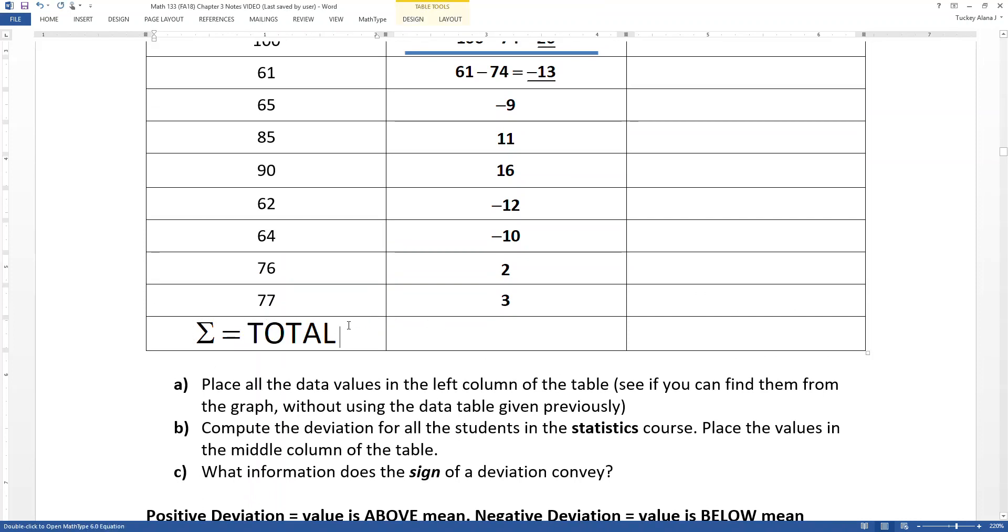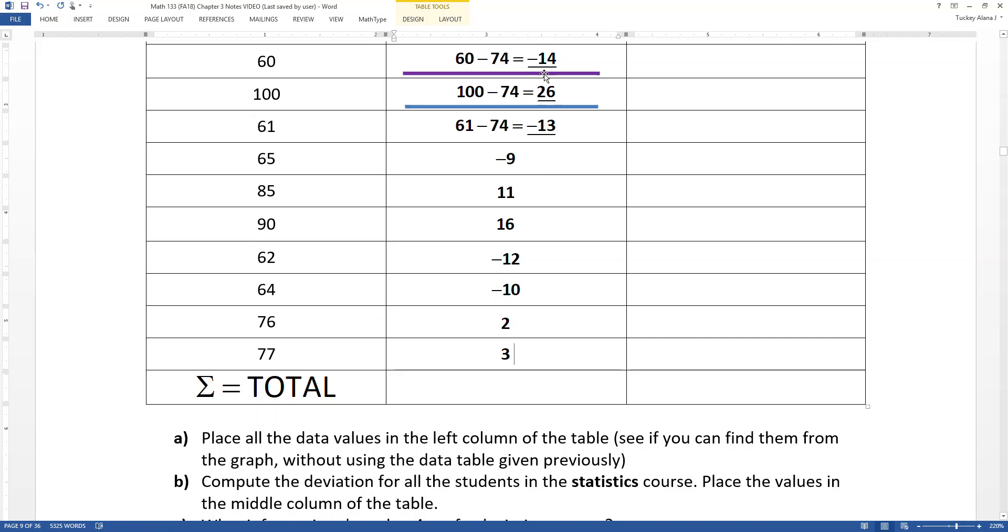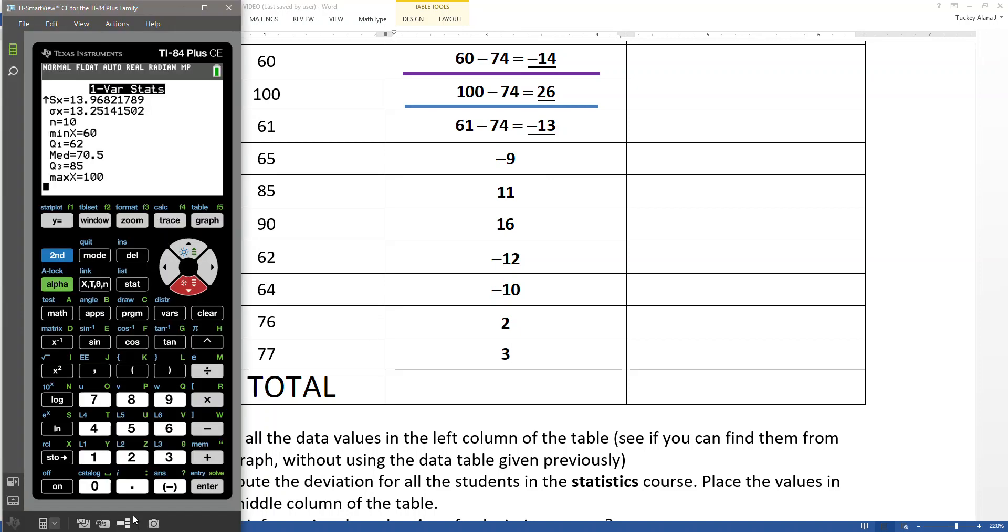If you're thinking what I'm thinking, we want to find a mean. So that's what that big sigma stands for—it means we're going to find the total. Capital sigma means you're going to find the total. Now if we find the total, if we add all these numbers up—negative 14 plus 26 plus negative 13 and so on—can you take a guess of what you're going to have? I've typed in all the numbers, let's press enter and see. Yep, zero. That's what I get. A big zero. When I add the deviations I get nothing.